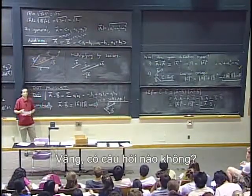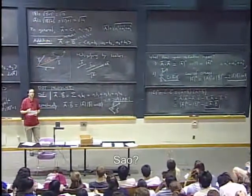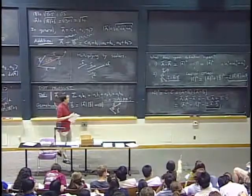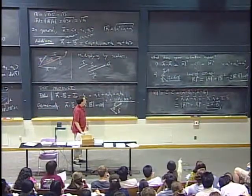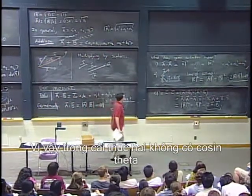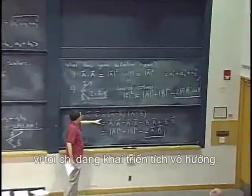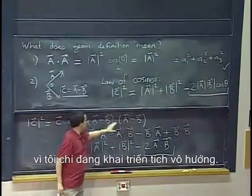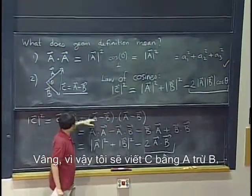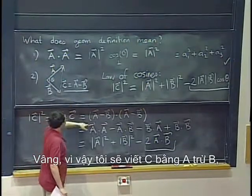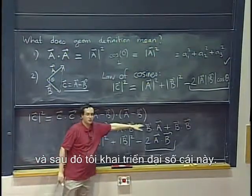OK, any questions? Yes? Why isn't there cosine theta in the second one? So in the second one there isn't a cosine theta because I am just expanding a dot product. OK, so I am just writing c equals a minus b and then I am expanding this algebraically.